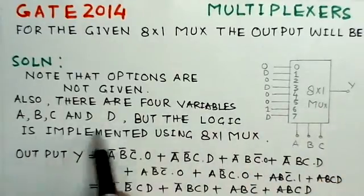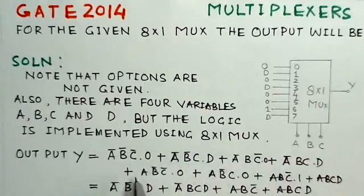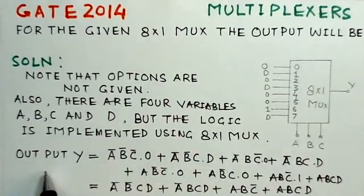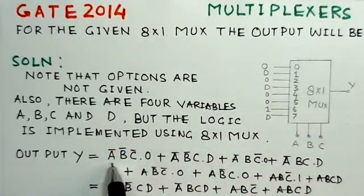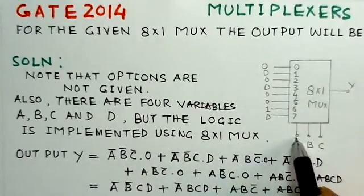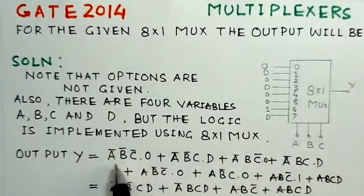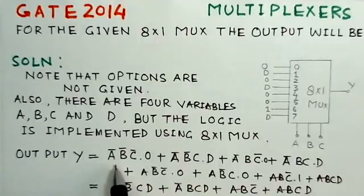So this we need to be implemented. Now what we will do is we will try to write the outputs here for this multiplexer. See, these are the 3 select lines A, B, C. So the first output will be A bar B bar C bar into the input here, that is zero input here, plus—